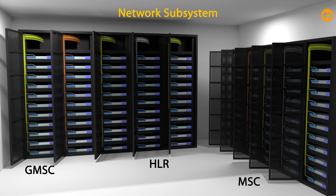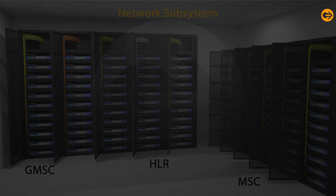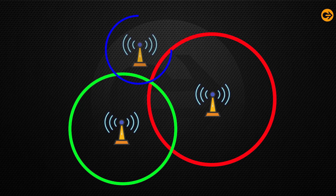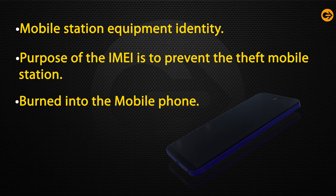The network subsystem gives the basic network link to the mobile station. The mobile services switching center grants access to various networks like ISDN, PSTN, etc. It also consists of the home location register and the visitor location register, which provide call routing and roaming capabilities of GSM. The equipment identity register mainly maintains an account for all mobile equipment identified by its IMEI number. IMEI stands for International Mobile Equipment Identity.